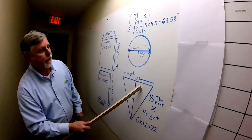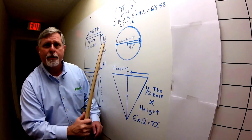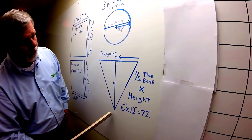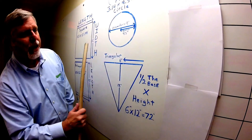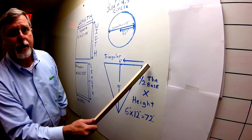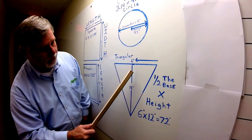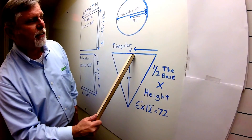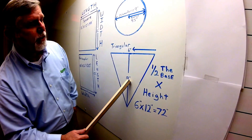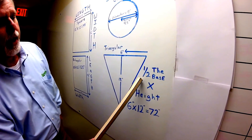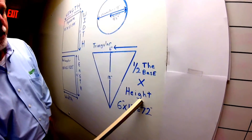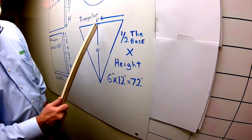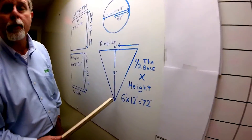We'll save pi for last. For the triangle, what we're going to do with that triangular shape — it's sort of shaped like a piece of pie — is take half the base times the height. In this case, we have 6 inches times 12 inches. Half the base times the height: 6 times 12 equals 72 square inches. That could be feet — 6 foot by 12 foot.